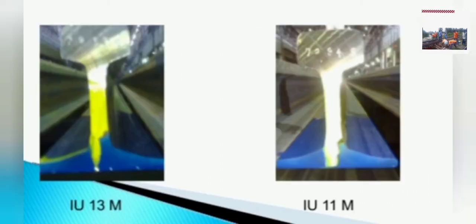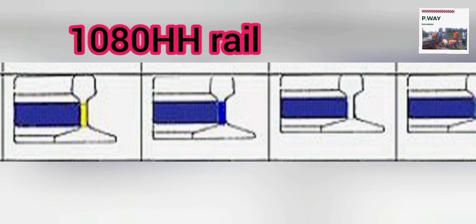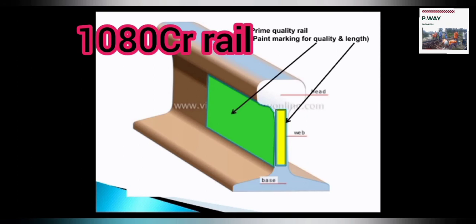Industrial use rails are also painted for different lengths. Now let's see the color codes for different types of rails. There is no paint mark on 880 grade rails. And 1080 head iron rails are painted with blue color on both sides of the web surface for a distance of 500mm from each end.